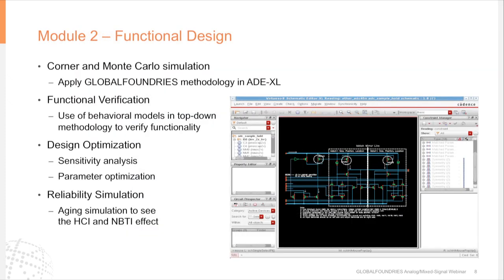The first module is Functional Design, covering schematic-level design and simulation. The flow demonstrates Global Foundries methodology and device models on our phase-lock loop, particularly highlighting Corner and Monte Carlo simulation in the ADE environment. It also covers typical analog design methodologies such as functional verification using behavioral models and design optimization using sensitivity analysis and parameter optimization. Additionally, we cover foundry reliability simulation accounting for hot carrier injection and negative bias temperature instability, demonstrating the impact of reliability over 10 years on the VCO.